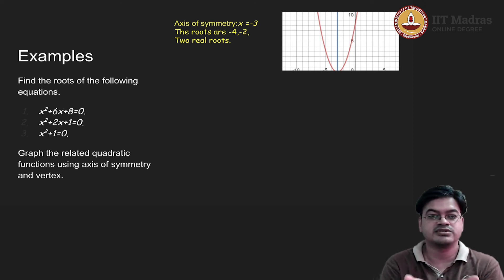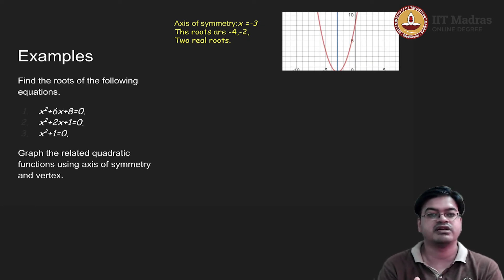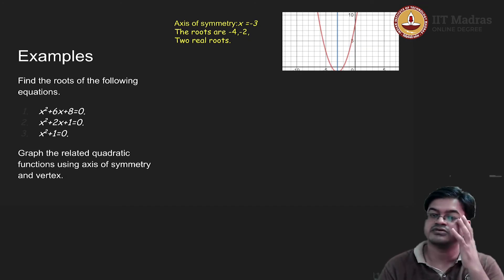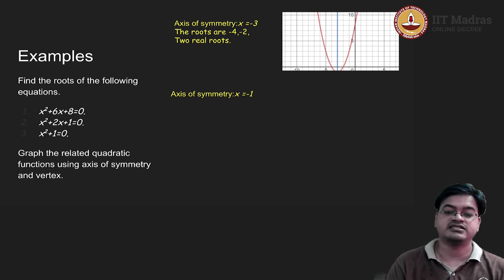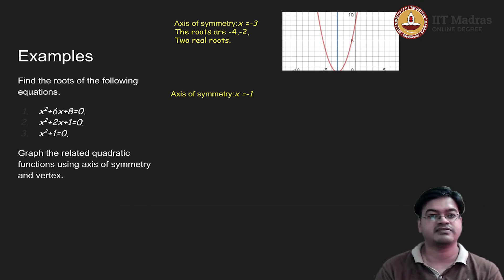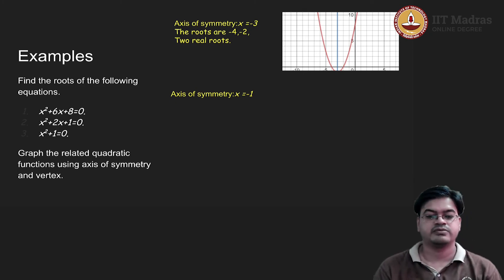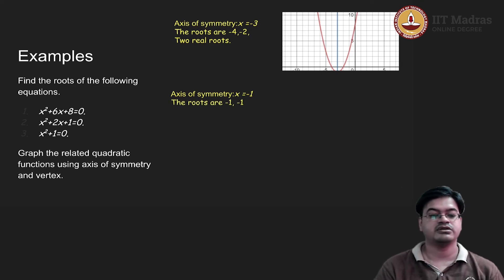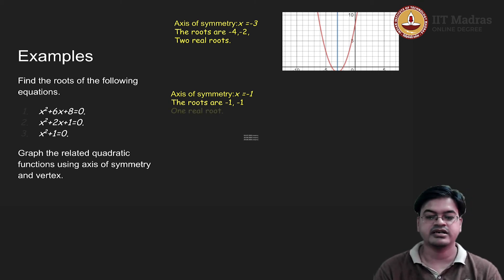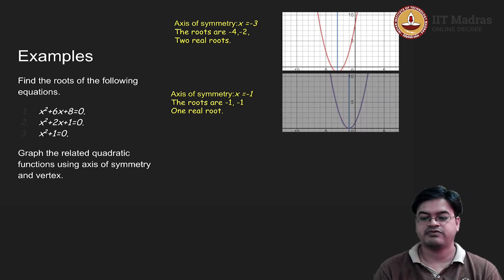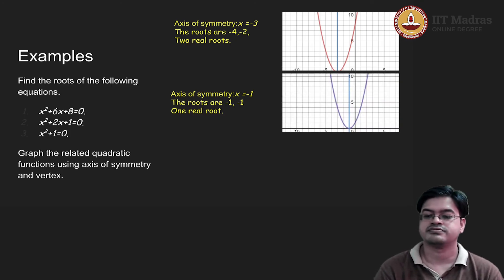Since x = -1 is the vertex and gives value 0, and the curve opens up (a > 0), there cannot be any other point where the function equals 0. Therefore, the equation has only one real root, x = -1, which is repeated twice. The graph of the function touches the x-axis at exactly one point.